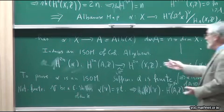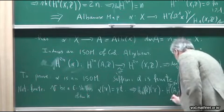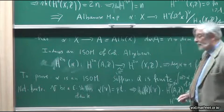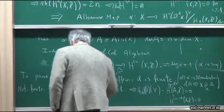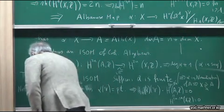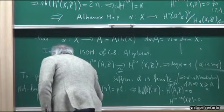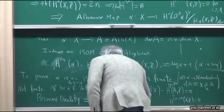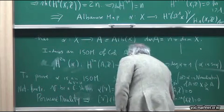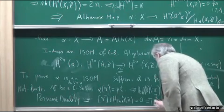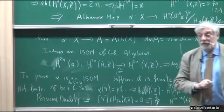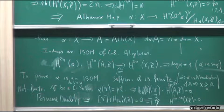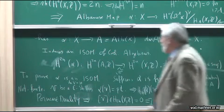But we have an isomorphism, so this is the same as H_{2N-2K}(X, Z) = 0. By Poincaré duality, this implies that the class of V in H_{2K}(X, Z) is zero.